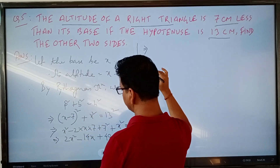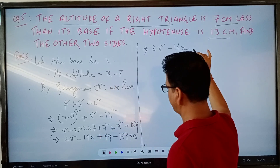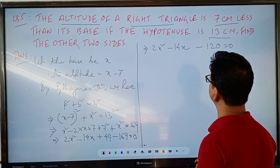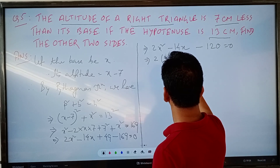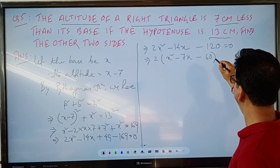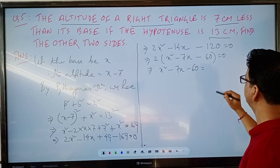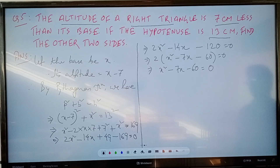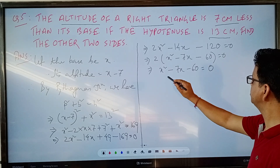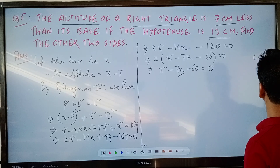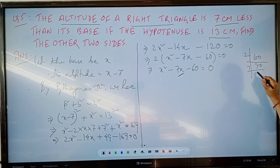This gives us 2x squared minus 14x plus 49 minus 169 equals 0, which simplifies to 2x squared minus 14x minus 120 equals 0. Dividing through by 2, we get x squared minus 7x minus 60 equals 0.